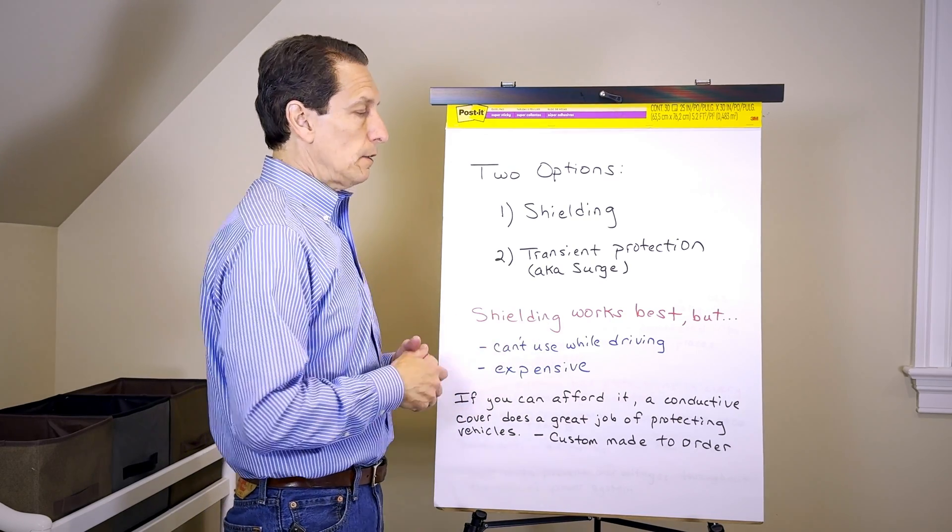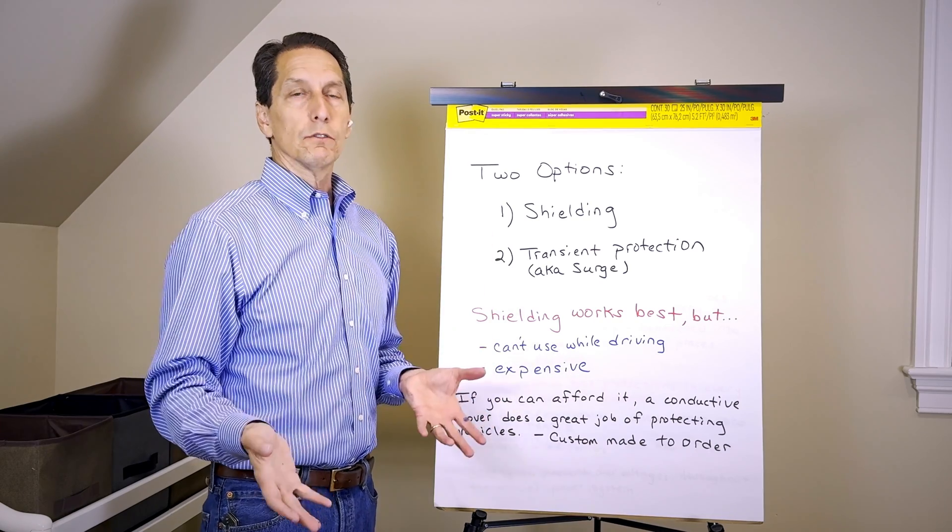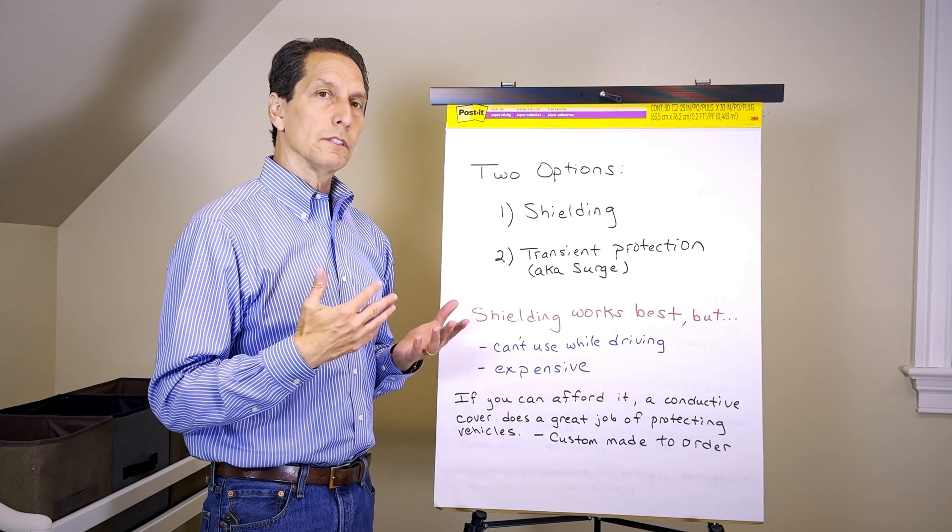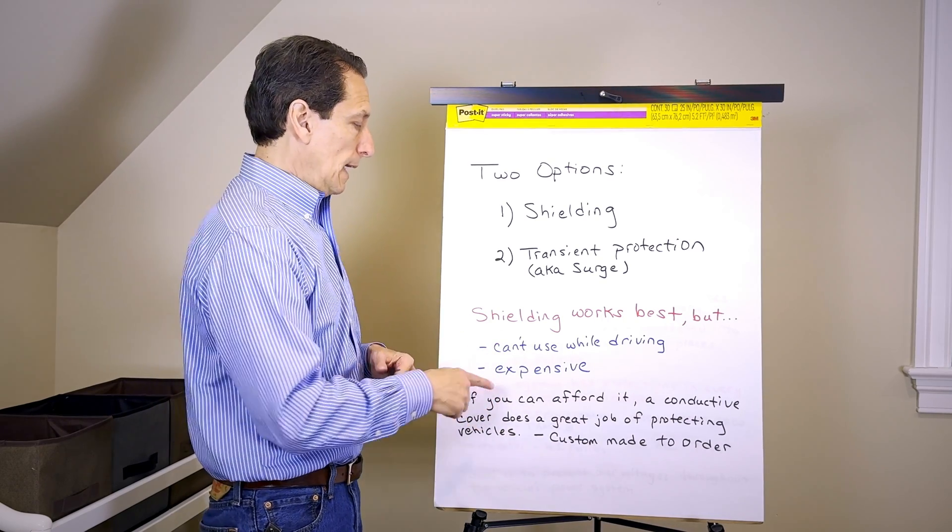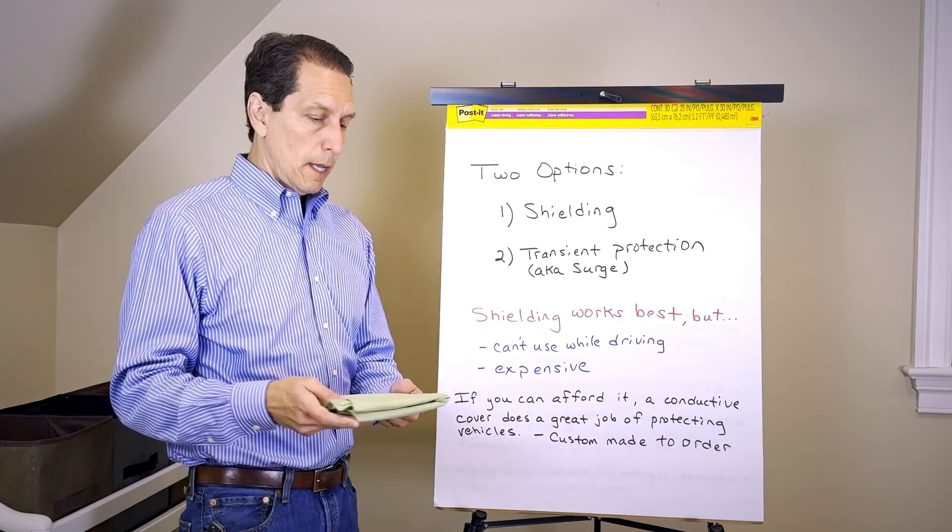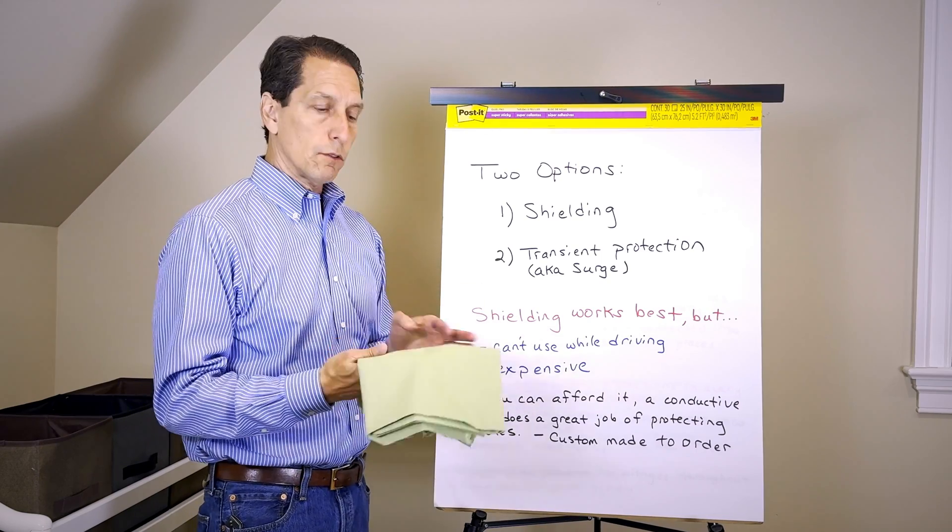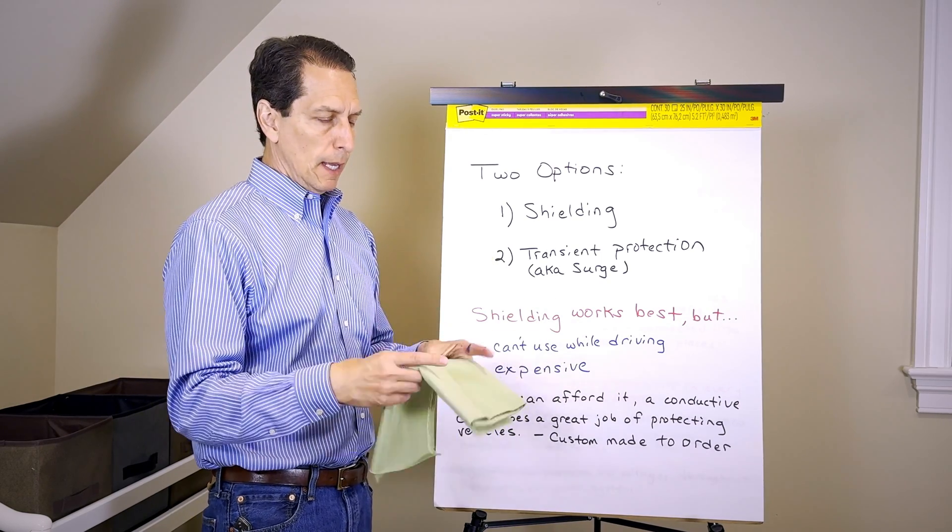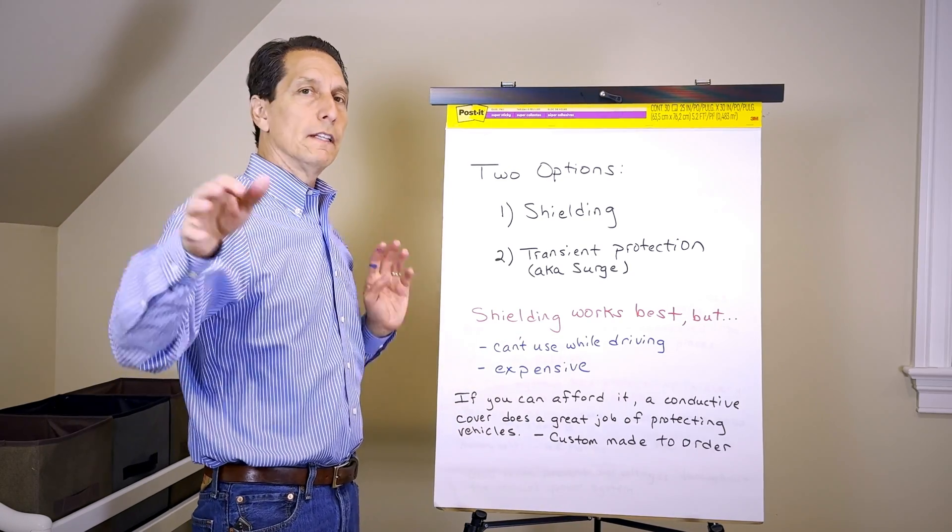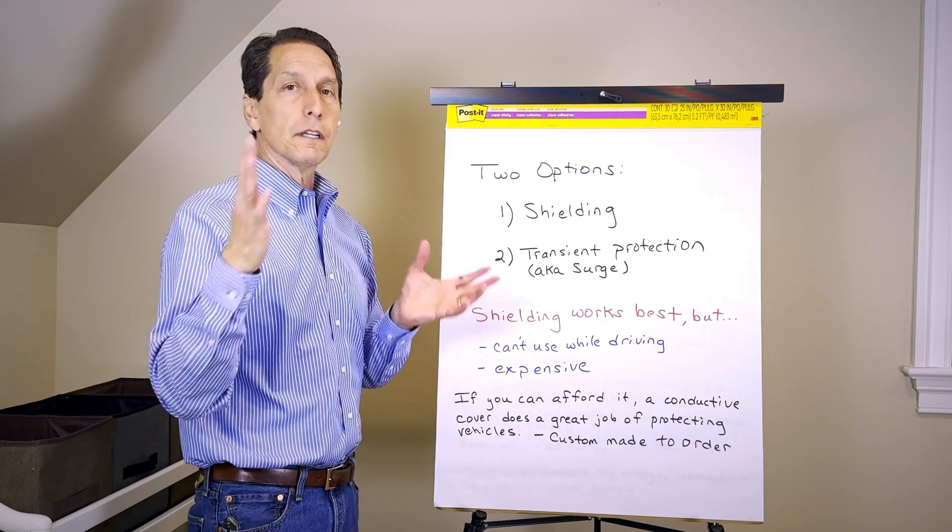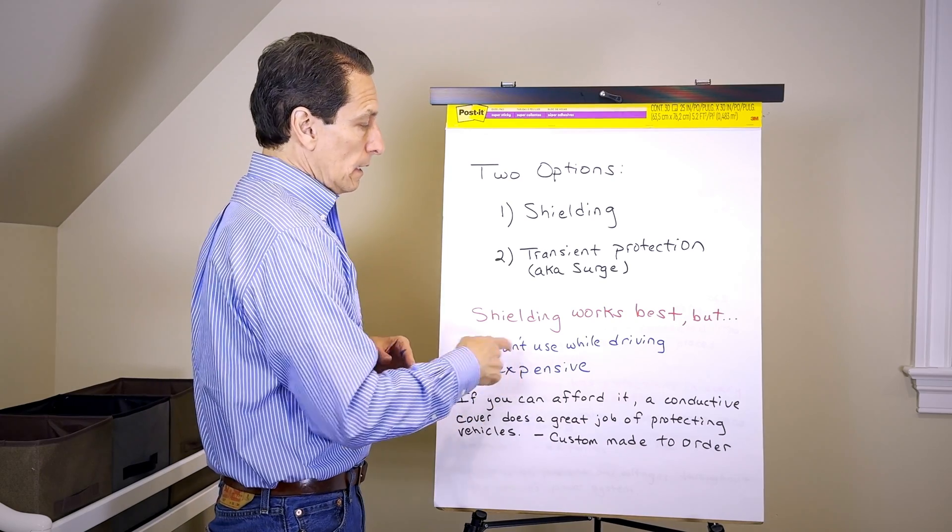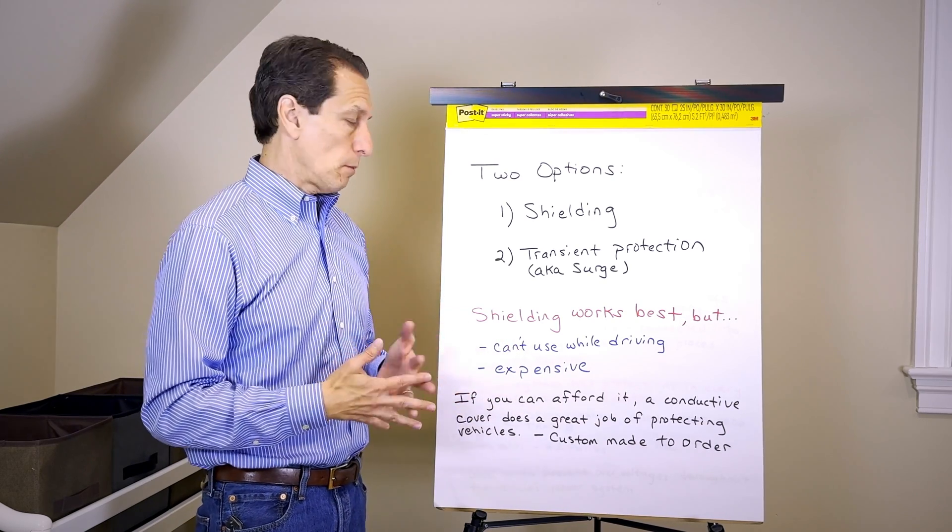The two obvious disadvantages of shielding: first, you can't use it while driving. You can't fully enclose your vehicle in something conductive when you're driving, so it's limited to when the car is not being driven, perhaps stored in the garage. Second, it's very expensive. We typically make conductive car covers out of green cloth that has a stainless steel fiber mesh in it. Making something 25 feet long or 15 feet wide takes a lot of that cloth, and that cloth is very expensive.